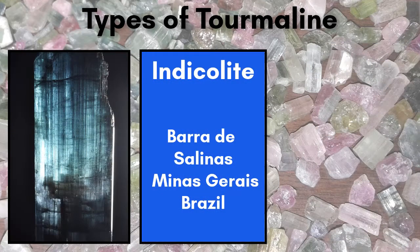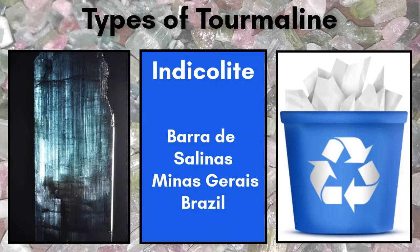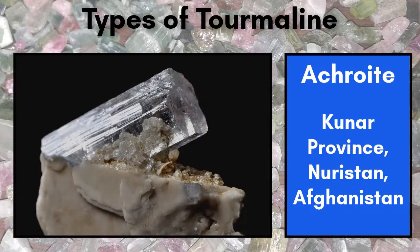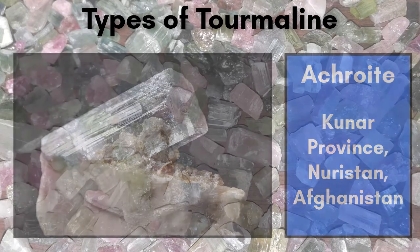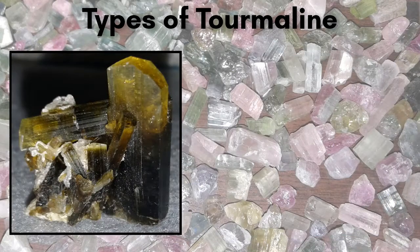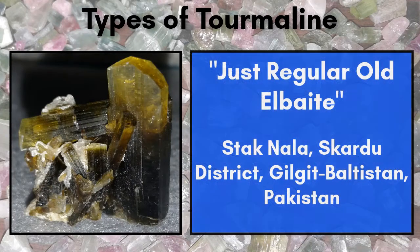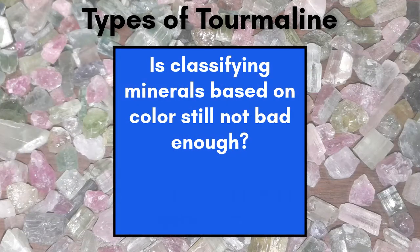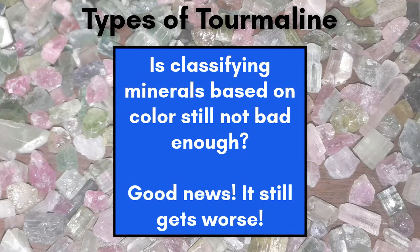Indicolite is the blue variety and is also my favorite because it reminds us to recycle. Rubilite is the pink-to-red variety, acroite is colorless, and the green variety is called, well, just regular old verdelite. Some types, like paraiba tourmaline, were named based on their locale, which is an even worse way to classify than color.